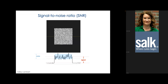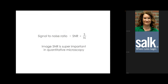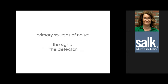There are two primary sources of noise: the signal itself, and noise generated by the detector. When making intensity measurements, you're ultimately counting photons. We often report them in arbitrary units, but the actual unit is photons. Because photon flux is a stochastic process, counting it gives a variance equal to the square root of the number of photons counted — this is Poisson noise, also called shot noise, photon noise, or signal noise.